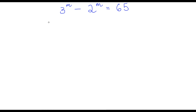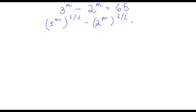What I'm first going to do is take the power of 2 over 2 on the left-hand side. So now I have 3 to the power of m to the power of 2 over 2, minus 2 to the power of m to the power of 2 over 2, equal to 65. Now 2 over 2 is the same thing as 1, so 3 to the power of m to the power of 1 is just 3 to the power of m — we didn't make any major changes here.